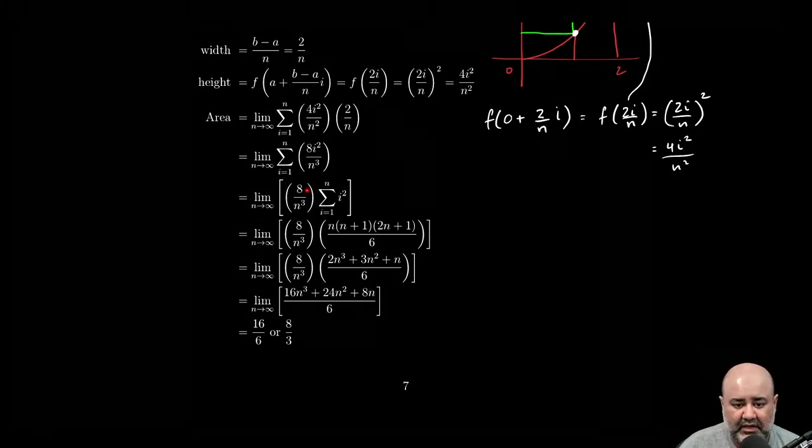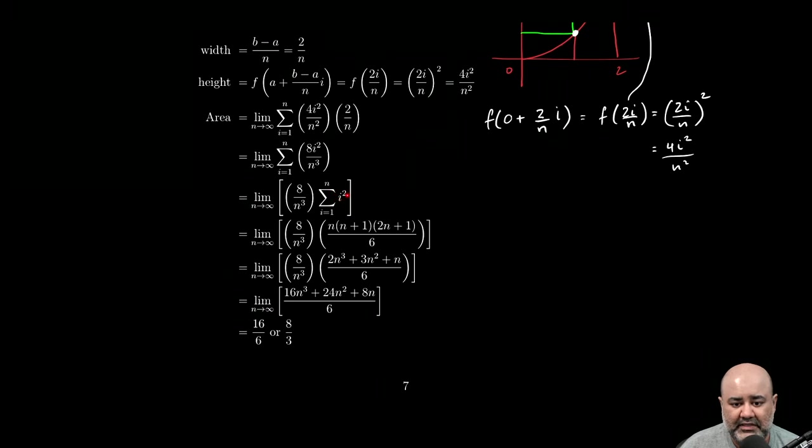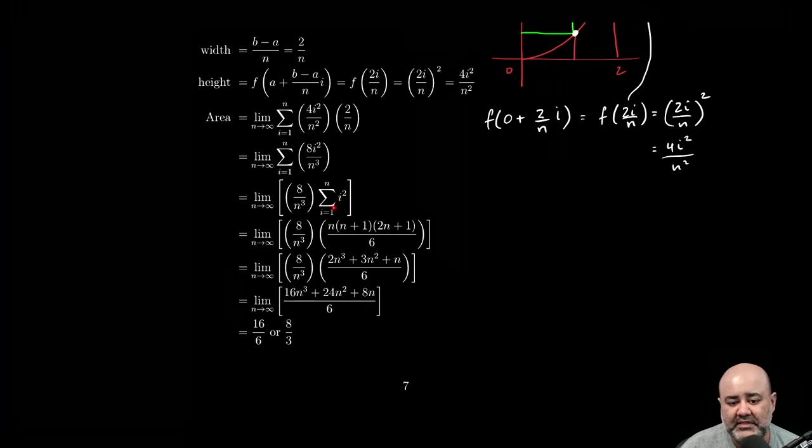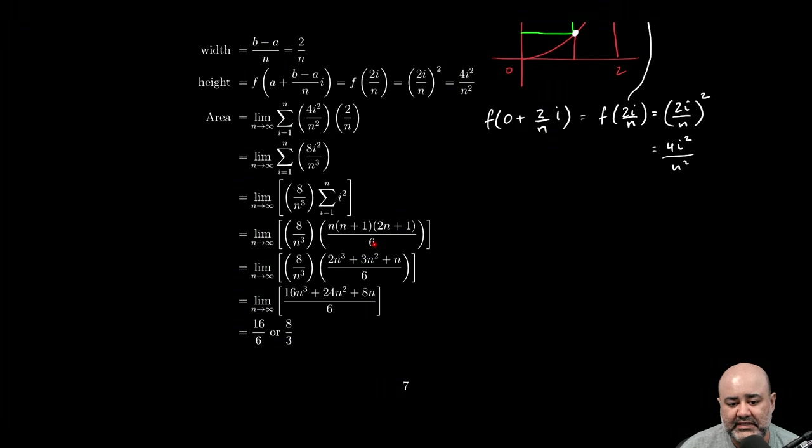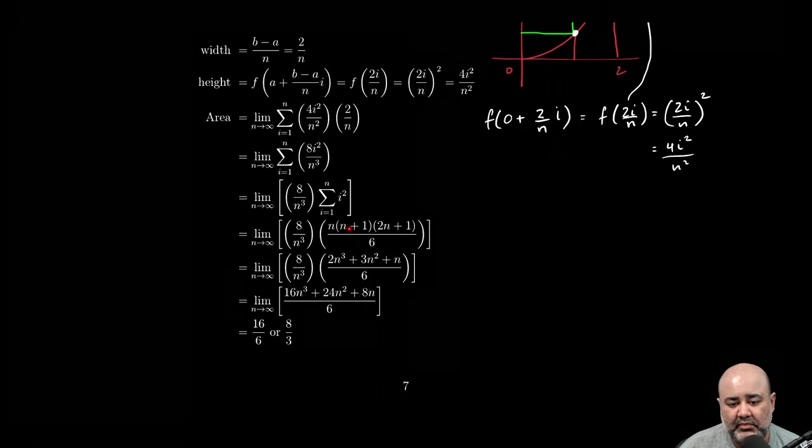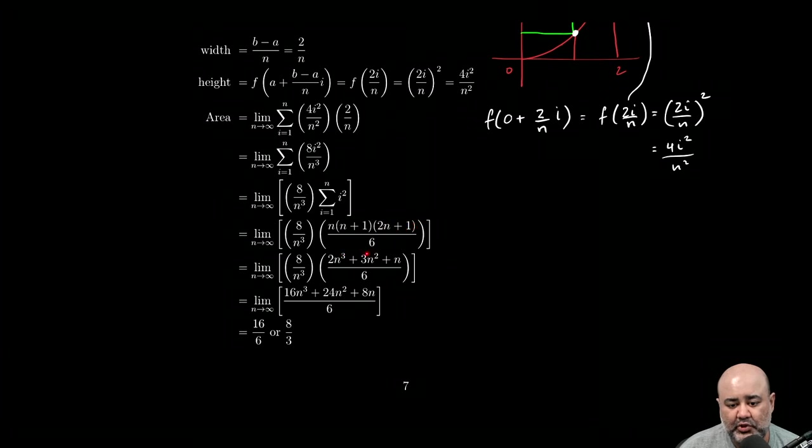Now, once we've taken out the constant 8 over N cubed, we're left with the summation of I squared from I equals 1 to N. Remember, this is where those formulas that I said you have to memorize come in to help us. We know that this formula is N times N plus 1 times 2N plus 1 over 6. If we multiply this out in the numerator, you would get N times N plus 1, which is N squared plus N. And if you foiled that out against 2N plus 1, you should get this. Pause the video, convince yourself that this algebra was done correctly.